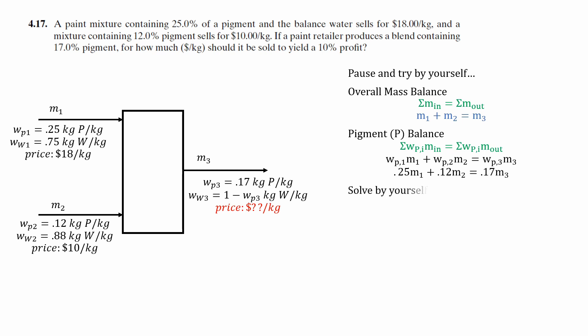So at this point, if you just got these equations, I definitely recommend you try to solve the algebra by yourself. So we can plug in these values, plug in the overall mass balance equation into the pigment balance equation. But we realize we have too many unknowns. So what happened?